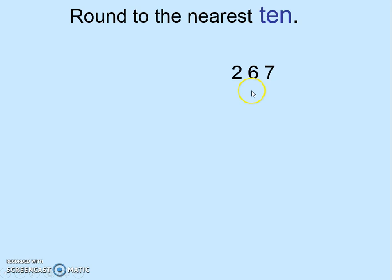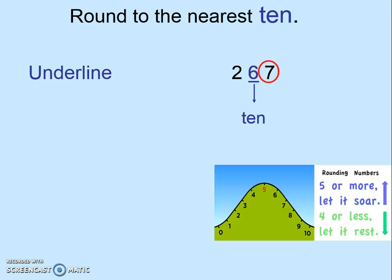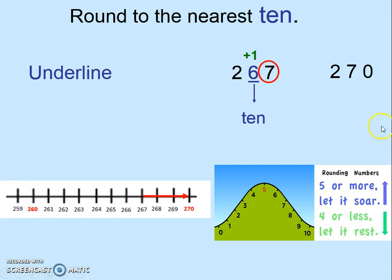Let's try some more examples. Round to the nearest 10. Again, underline the digit in the tens place. Circle the number to the right. 7 is more than 5, so we add 1 to the 6 in the tens place, and that becomes 70. We don't touch the numbers before the tens place. You can look at a number line to help you understand: 267 is found between the multiples 260 and 270, but clearly it's closer to 270.